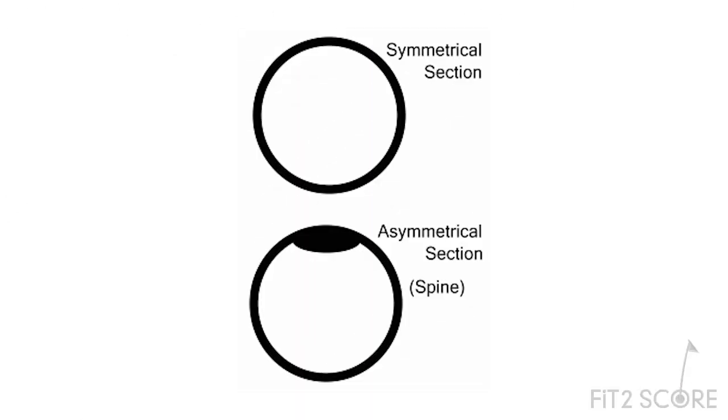Before we can measure a spine, it would help if we define it. I'm going to borrow directly from Dave's article. It is thought that some manufacturing process, like welding steel or wrapping graphite, causes asymmetry in the shaft, as you can see in this illustration.